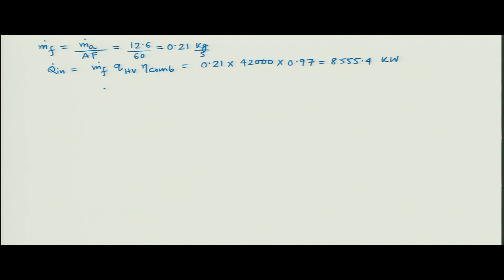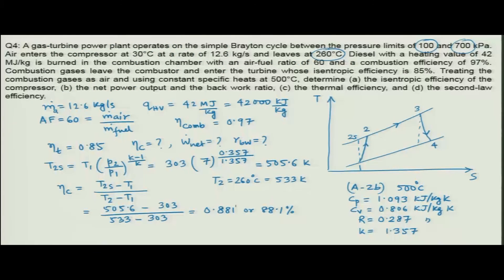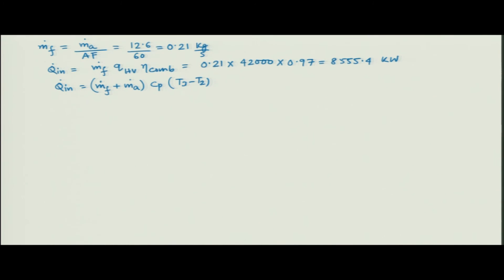From the first law applied to the combustor: Q_dot_in = (m_dot_a + m_dot_f) × C_p × (T_3 - T_2). Substituting the known values, T_3 comes out to be 1144 Kelvin — the temperature at the exit of the combustor.